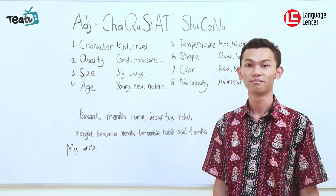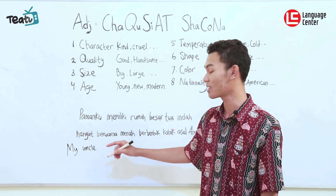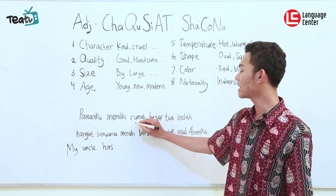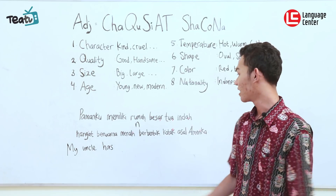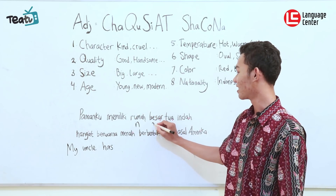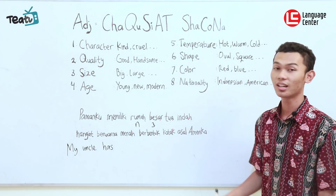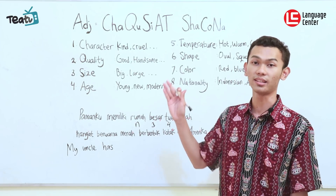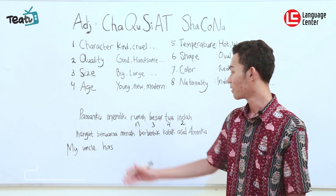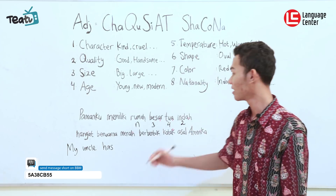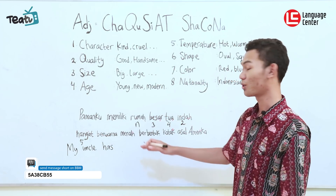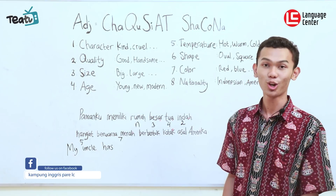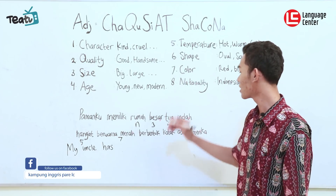Pamanku means 'my uncle.' Memiliki means 'have,' but because it is singular we use 'has.' Rumah means 'house' — that's the noun, so we put it last. Besar is size, number three. Indah is quality, number two. Hangat is temperature, number five. Merah is color, number seven. Kotak is shape, so we use number six.